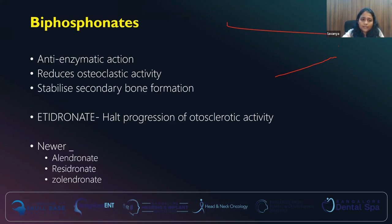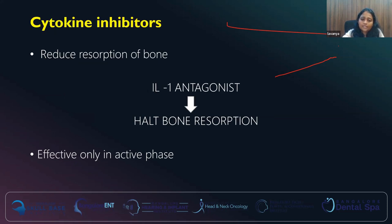The other drug is bisphosphonates. It has anti-enzymatic action, reduces osteoclastic activity, and stabilizes secondary bone formation. Alendronate is the older bisphosphonate that has been used; it basically halts the progression of the otosclerotic activity. The newer drugs are alendronate, risedronate, and zoledronate. Cytokine inhibitors act on the interleukin-1 antagonist, halting bone resorption — the osteoclastic activity. These will also work only in the active phase of the disease.